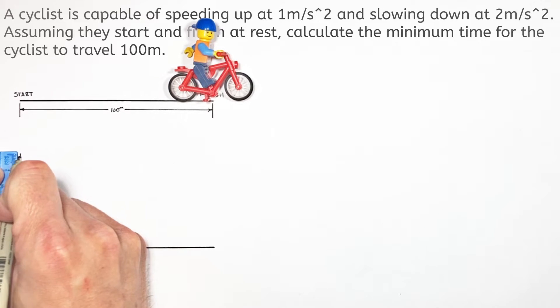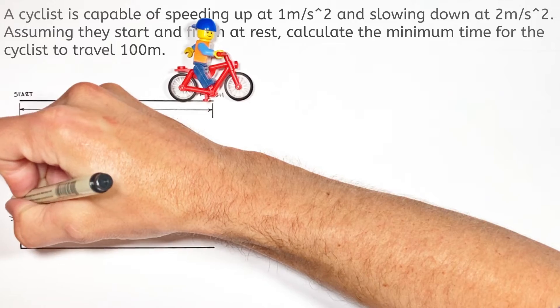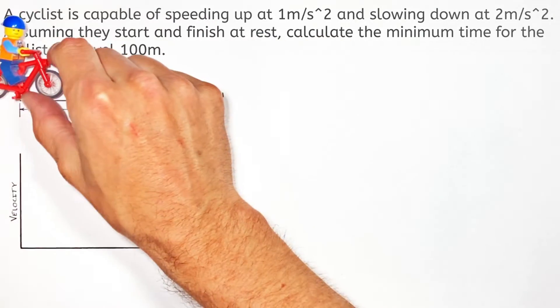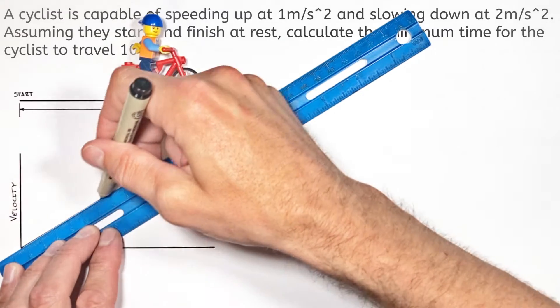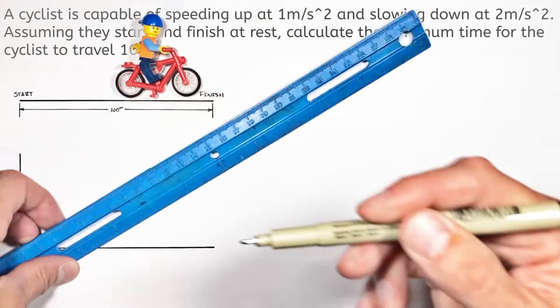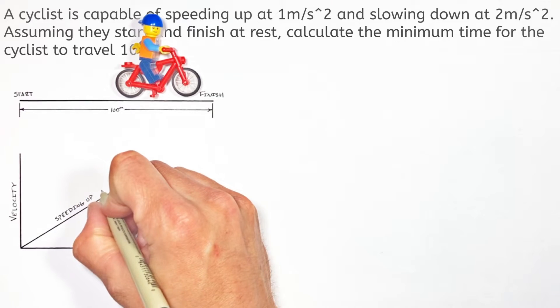So what I want to do is graph the velocity versus time of our little dude on a bicycle as he's riding along. Now our little guy is going to start at rest and accelerate forward at 1 meter per second squared. So on our graph we're going to see a diagonal line, or a steady increase in velocity as he speeds up.